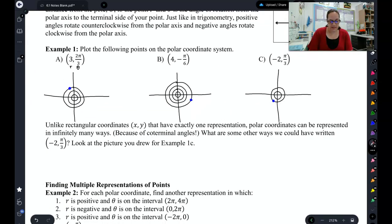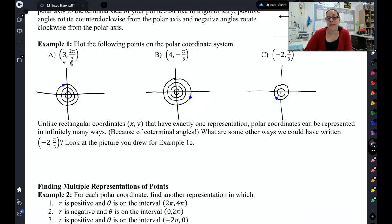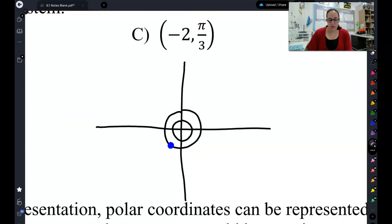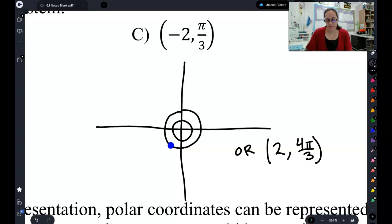Now, doing these examples, you might have noticed that there are actually several different ways we could write this. For example, let's go back to C. If I wanted to graph this point, negative 2 π/3, I could also label that as a positive 2 radius and at 4π/3. That would be the exact same point right here at 4π/3 and a radius of positive 2. So there are multiple ways that you can write the exact same point on the polar coordinate system.